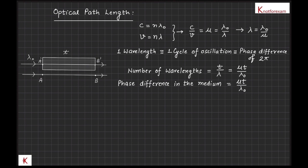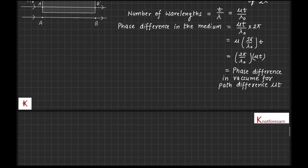Therefore phase difference between A dash and B dash at a distance t in the medium will be equal to number of wavelengths multiplied by 2 pi, that is mu t upon lambda naught into 2 pi, which can be written as 2 pi by lambda naught into mu t. That is equal to phase difference in vacuum for path length mu t.